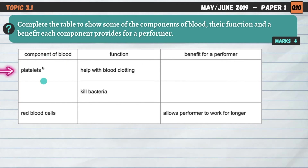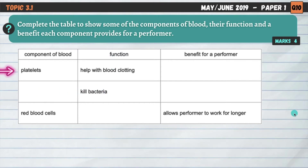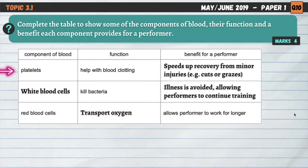Let's start with the first column — the components of blood. There are four you need to know. You've been given two already: platelets and red blood cells. So the remaining two are plasma and white blood cells. The function 'kill bacteria' suggests that this must be white blood cells. White blood cells is the missing component of blood, which fits with this function.